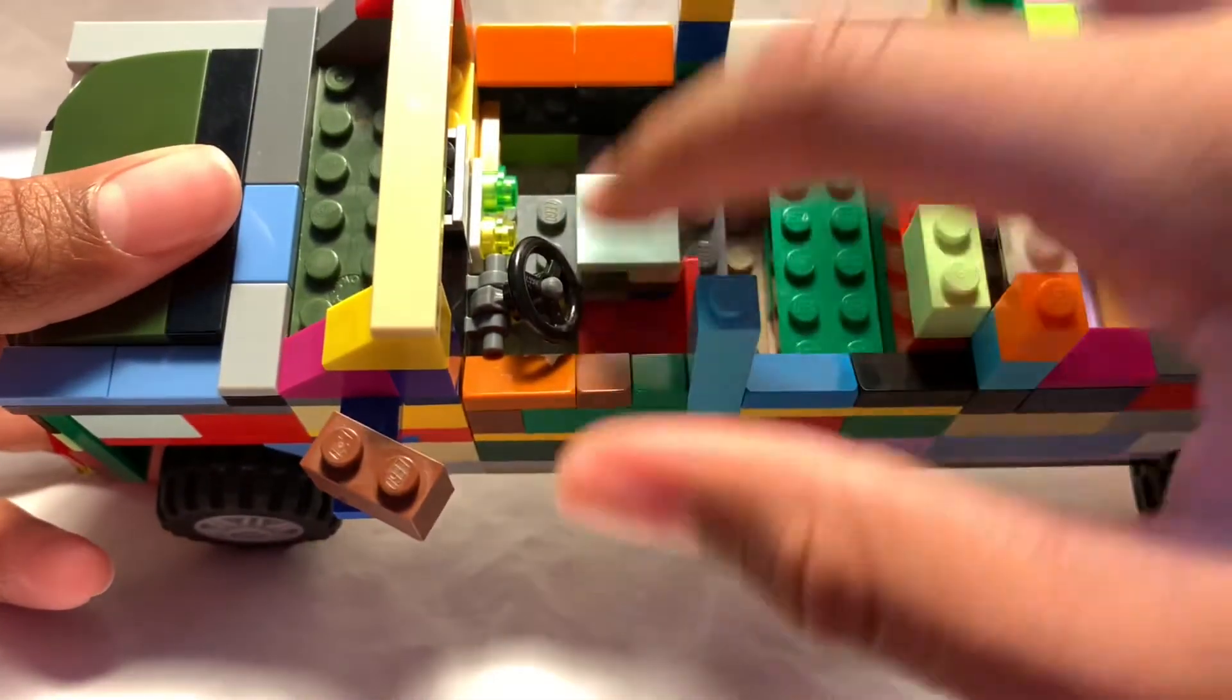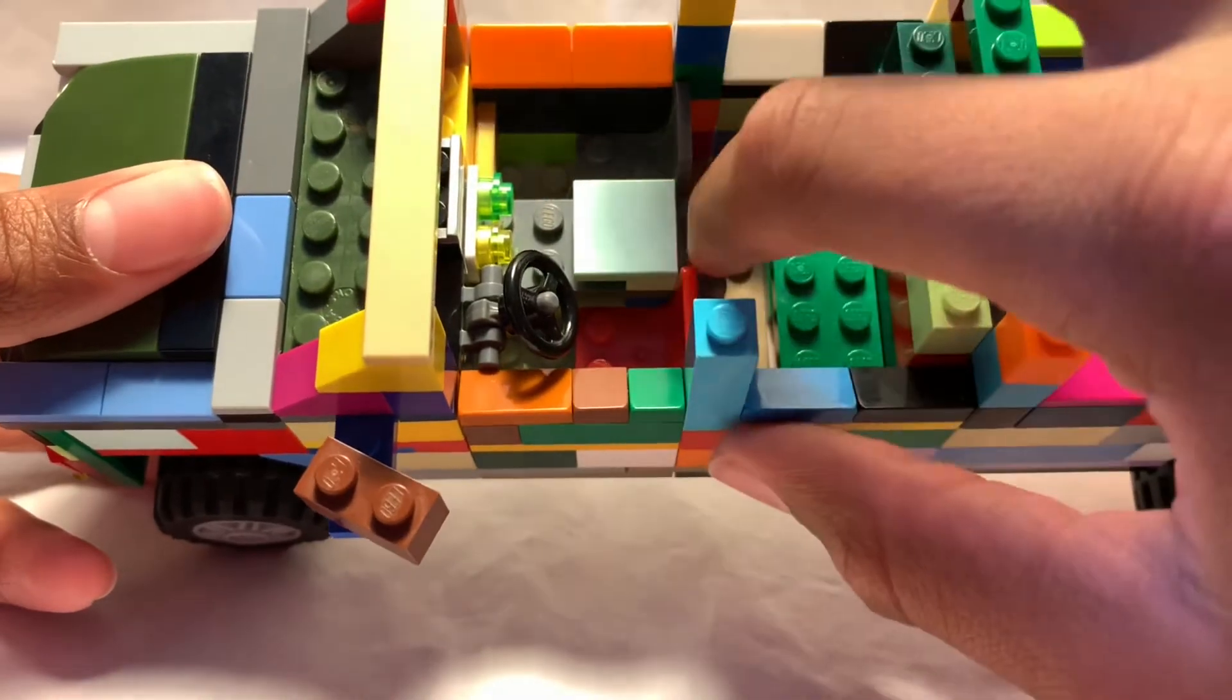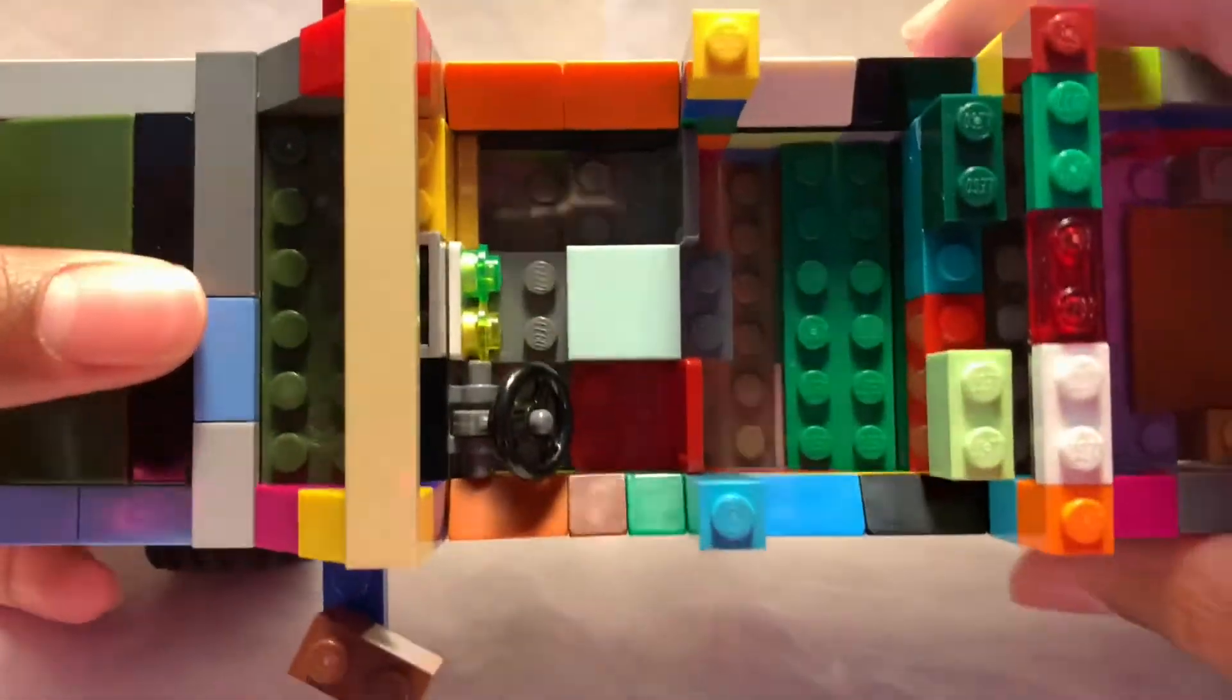And then basically we have like a nice little glove box right here so people can put their stuff and lotions and brushes or whatever, little reference cup holders right here in the front and back.